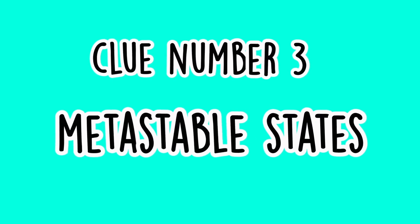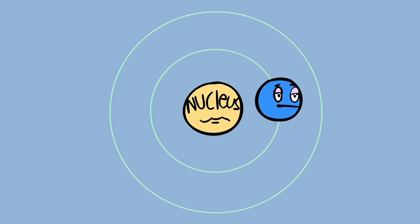Clue number three: metastable states. The most stable state for an electron to be in is what's called the ground state. This is the state with the lowest amount of energy. Again, because the universe is lazy. So if an electron is in the ground state, it's pretty happy just chilling out. And it's not going to move unless there's some kind of stimulus like a photon or collision.